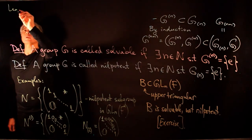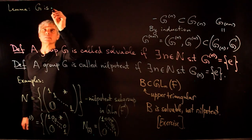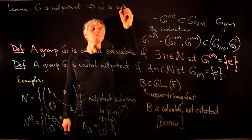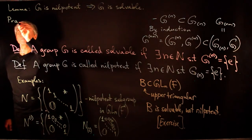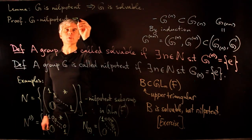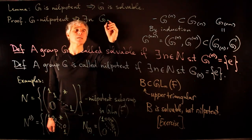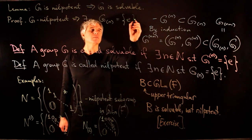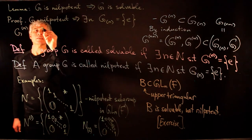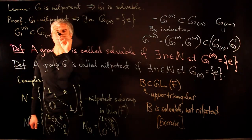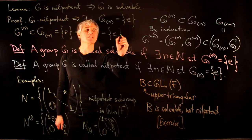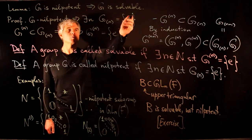Lemma: if G is nilpotent, then G is solvable. Proof: if G is nilpotent, there exists N such that the Nth subgroup of the lower central series equals identity. But we proved that the Nth commutator subgroup is contained inside the Nth subgroup of the lower central series. Since that subgroup equals identity, the Nth commutator subgroup also equals identity, so G is solvable by definition.